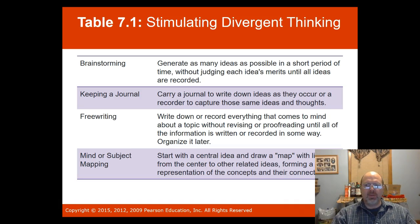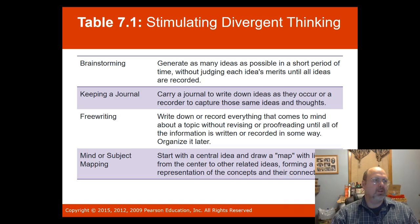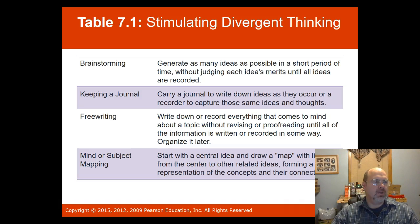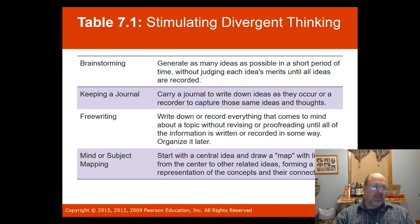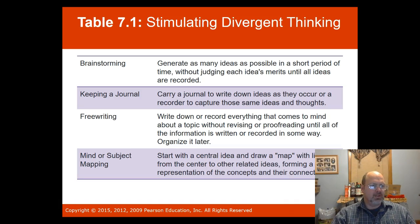Here are some ways to be a more divergent thinker. Brainstorming: think of as many possibilities as possible without judging anyone's input. Keeping a journal: write down ideas to recapture thoughts and stimulate divergent thinking. Free writing — also called hot penning — is writing down anything that comes to mind about a topic without revising. Mind or subject mapping starts with a central idea and draws lines to related areas, forming a visual representation of connections.